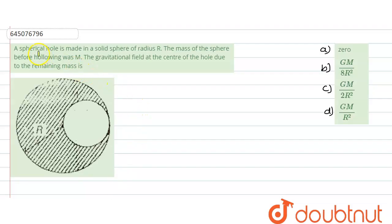In this question, a spherical hole is made in a solid sphere of radius R. The mass of the sphere before hollowing was M. We need to find the gravitational field at the center of the hole due to the remaining mass.